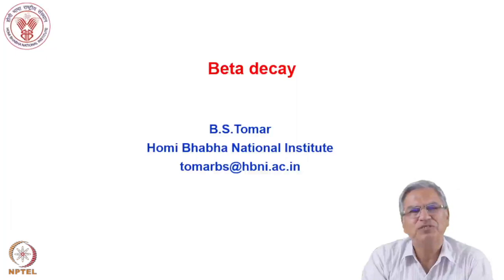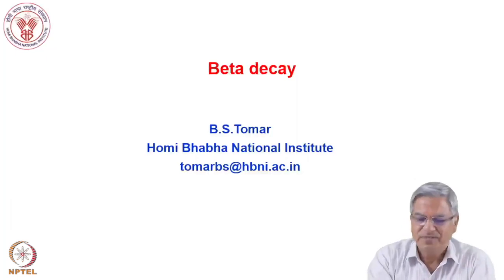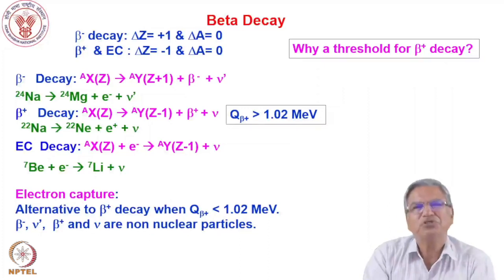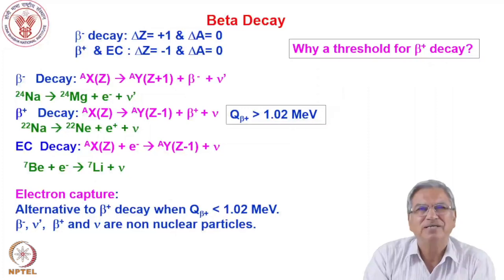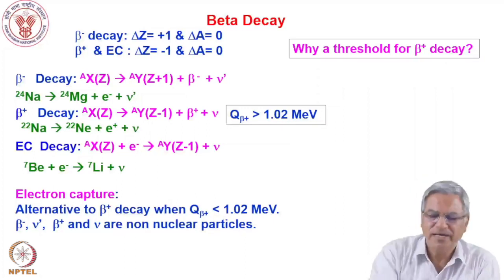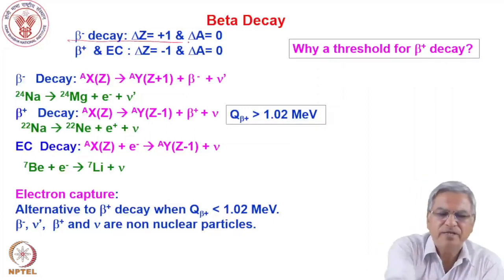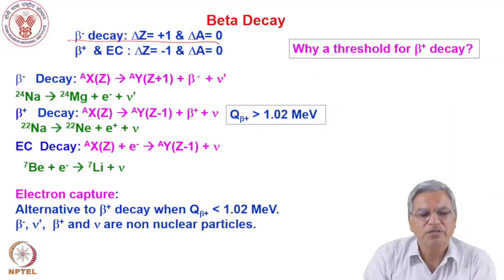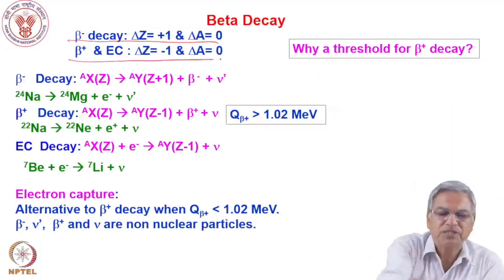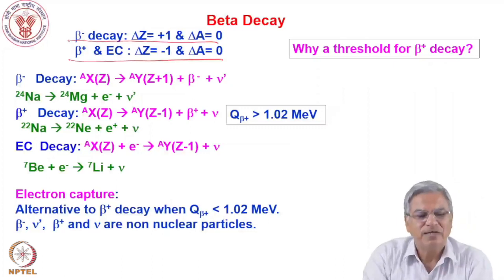Today we will discuss beta decay. As all of you know, beta decay happens along an isobaric chain because the mass number does not change in beta decay. Beta decay could be beta minus decay, where the atomic number increases by 1, or it could be beta plus decay, where the atomic number decreases by 1.